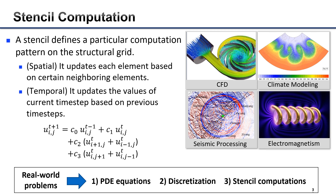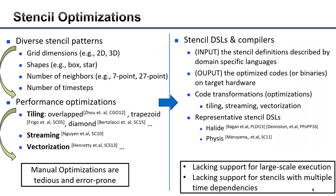Here we show a stencil derived from wave equations as a 2D 5-point stencil with 3 time steps. There are various patterns of stencils, as a stencil can be defined from many aspects, such as grid dimensions, shapes, number of neighbors, and time steps.